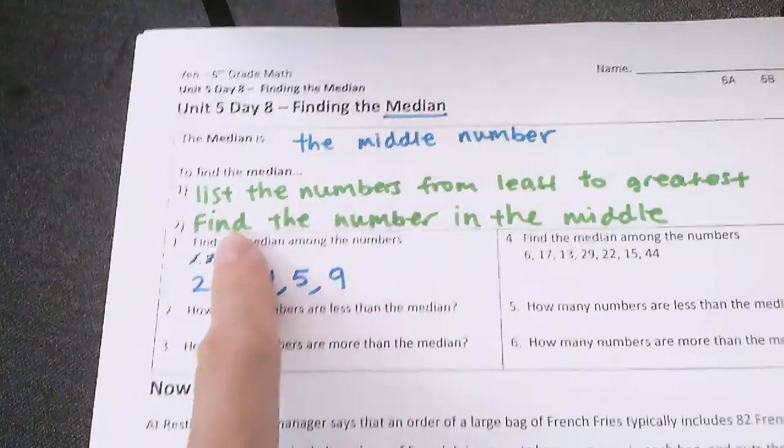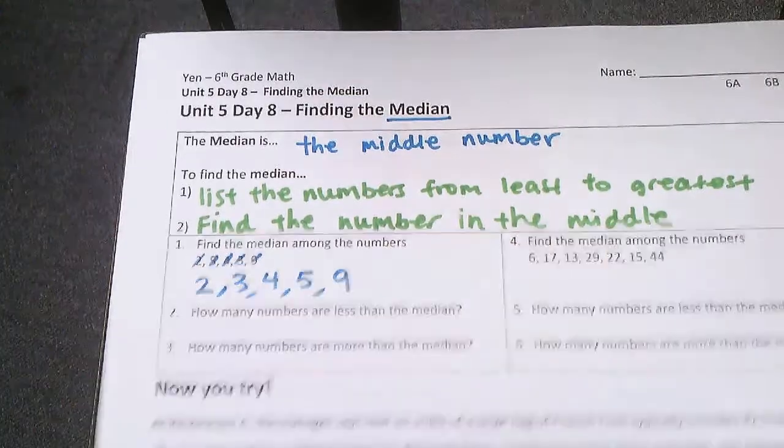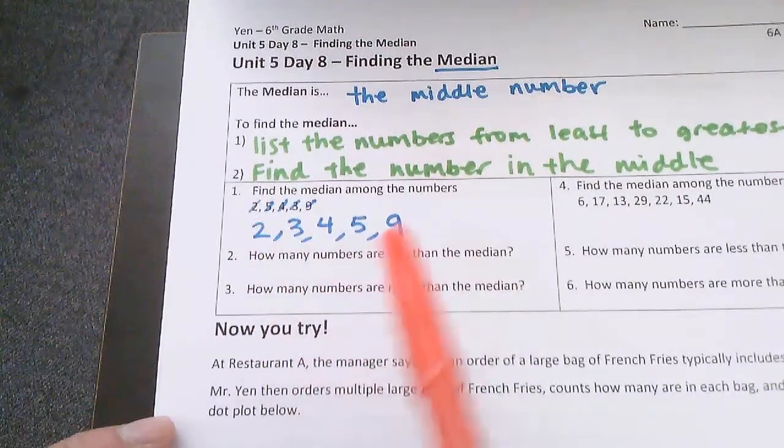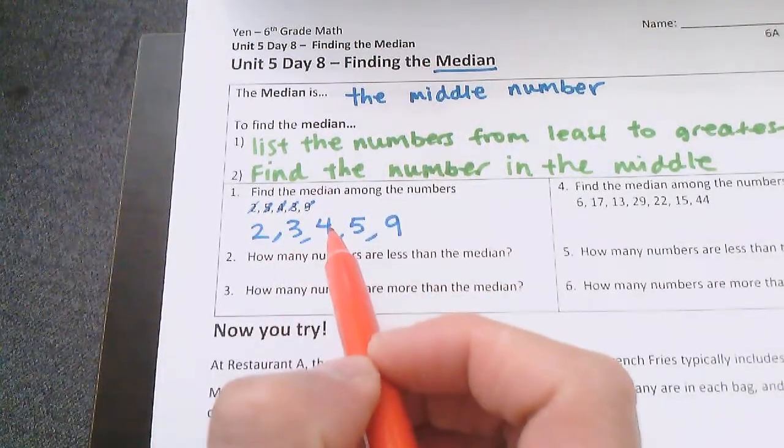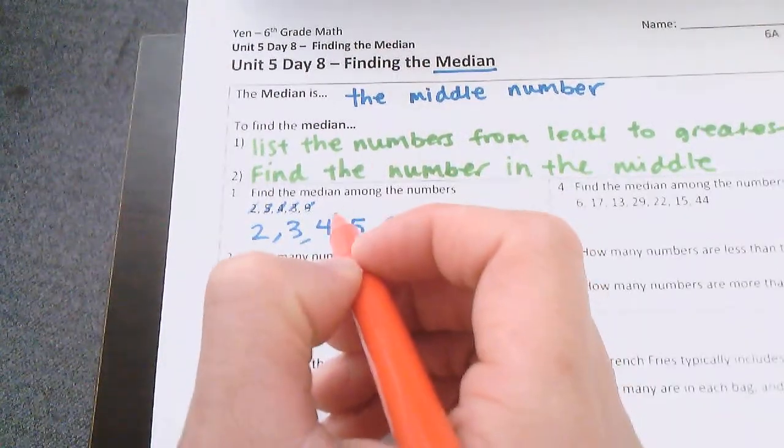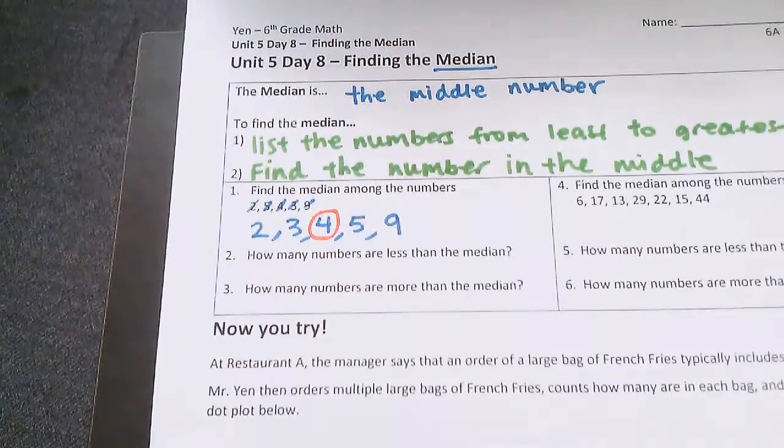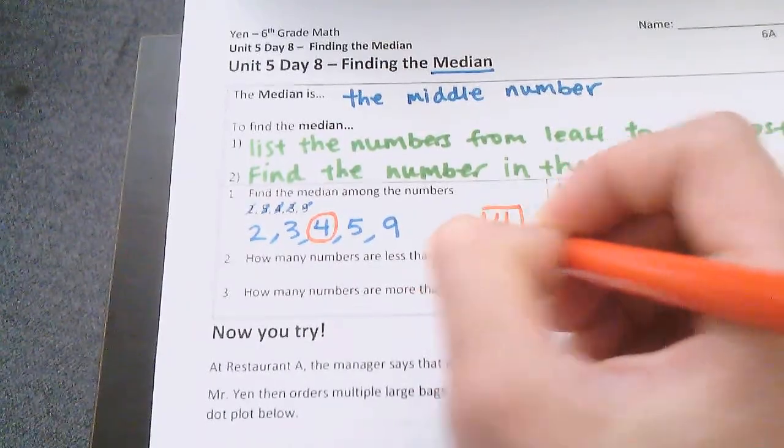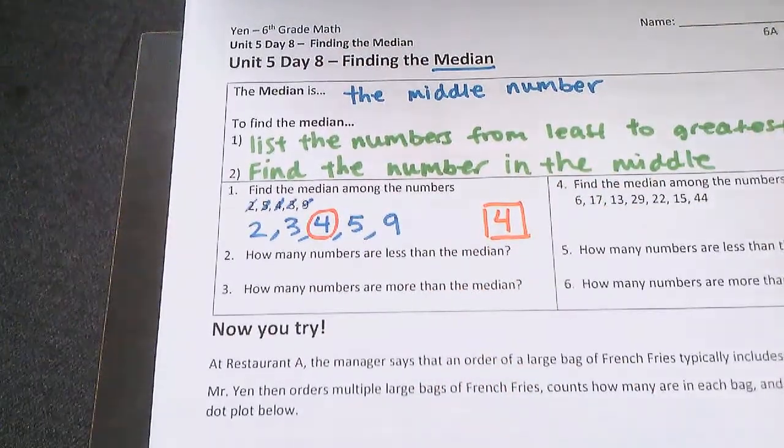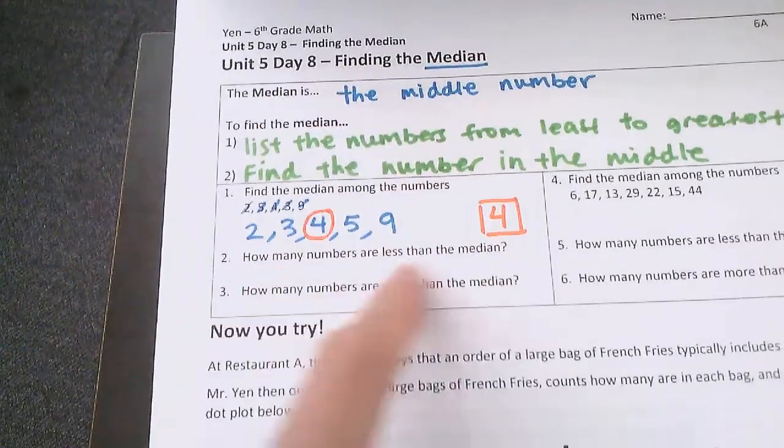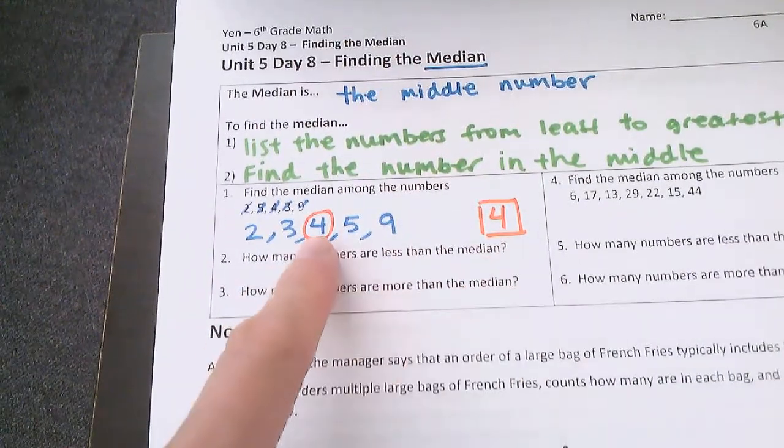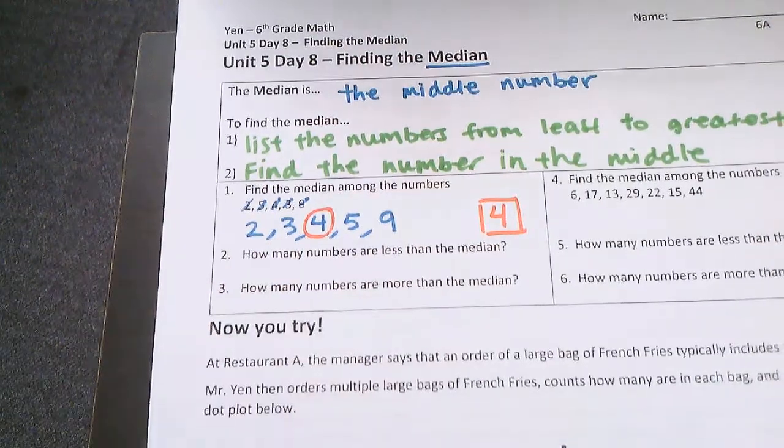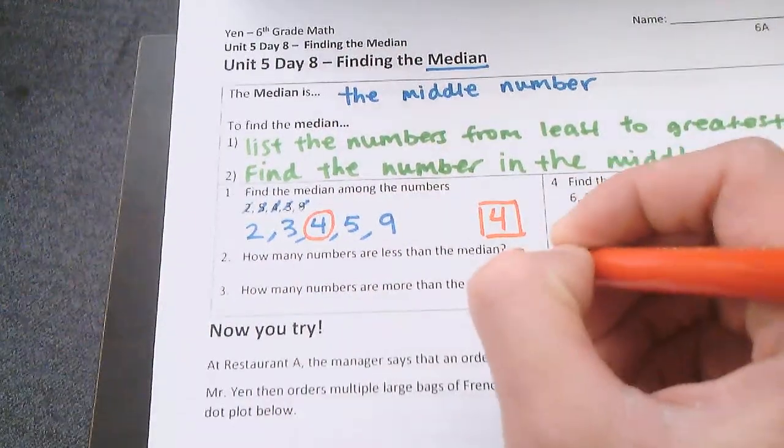And then step number 2 says to find the number that is in the middle. There are 1, 2, 3, 4, 5 numbers. So the third number is going to be right in the middle. So 4 is the median. How many numbers are less than the median? Well, the median is 4. 2 and 3 are less than 4. So there are two numbers that are less than the median. How many numbers are more than the median? That would be the numbers 5 and 9. So there are also two numbers that are greater than the median.